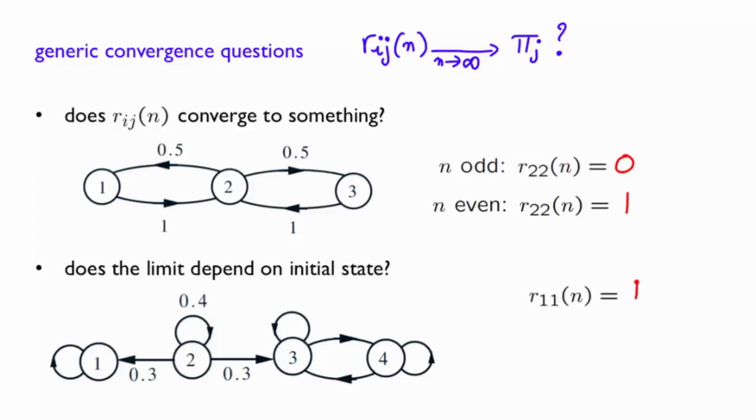On the other hand, if you start in state 3, there is no way you will ever reach state 1. So R31 of n will be 0.